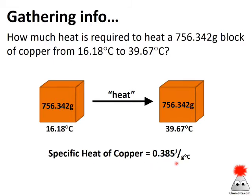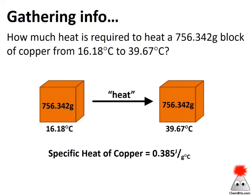Going back to the problem, the specific heat I found most quickly for copper is in joules, grams, and degrees C. One of the key things about specific heat problems — and I'm going to say this a bunch of times — let the units set up the problem for you. I want energy, so I'll use the specific heat with the energy unit in the numerator, then multiply by 756.342 grams so that unit cancels.